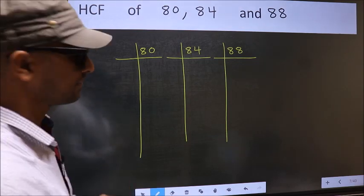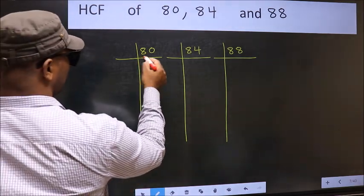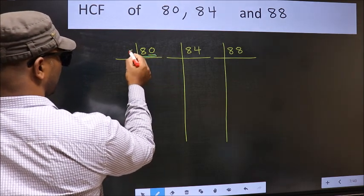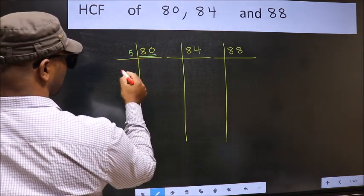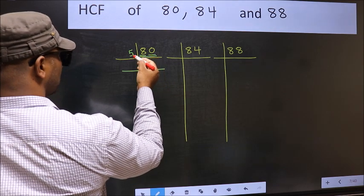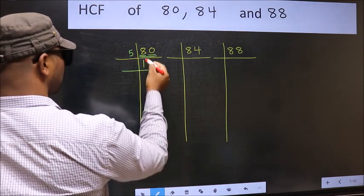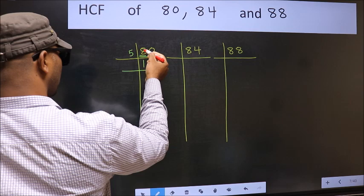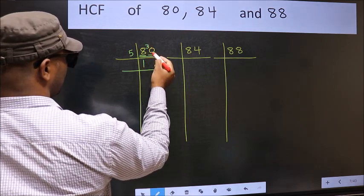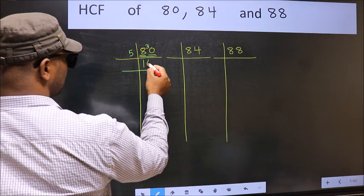Next, here we have 80. Last digit 0, so take 5. First number 8. A number close to 8 in the 5 times table is 5 once, 5. 8 minus 5 is 3, carried forward 30. When do we get 30 in the 5 times table? 5 sixes, 30.